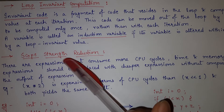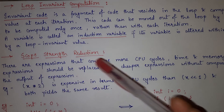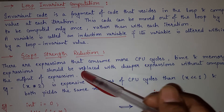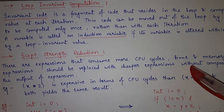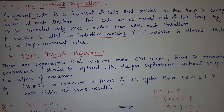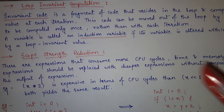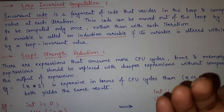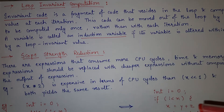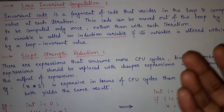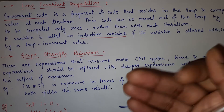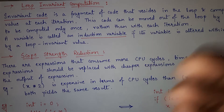Now let's see what is scope strength reduction. There are expressions that consume more CPU cycles, time, and memory. These expressions should be replaced with cheaper expressions without compromising the output. So scope strength reduction says that if there are any expensive expressions in your code — expressions that need much memory and many CPU cycles — such as multiplication and division, you can optimize the code by replacing those with cheaper expressions.